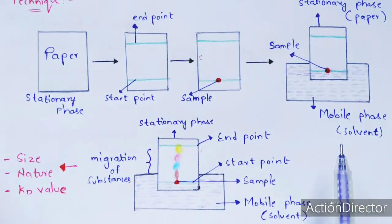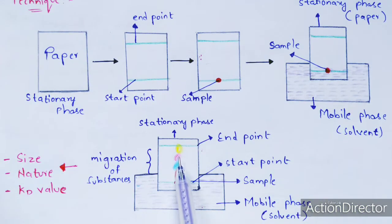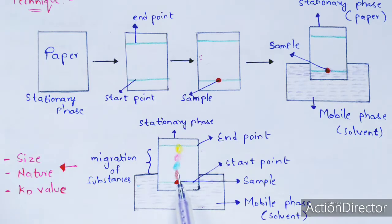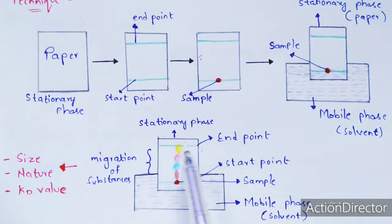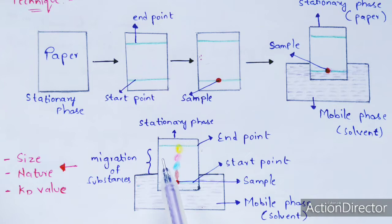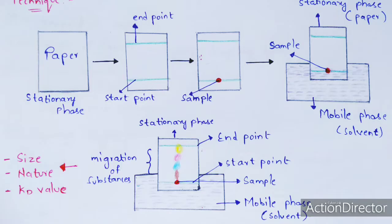The observation is that migration of substances occurs from the sample, and different colors of migrating particles can be observed. This migration depends upon the size of the sample, the nature of the sample, and the Kd value.